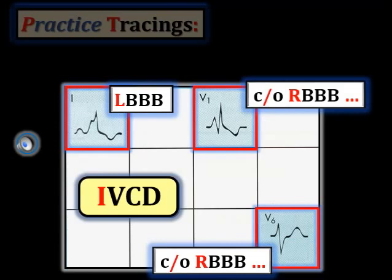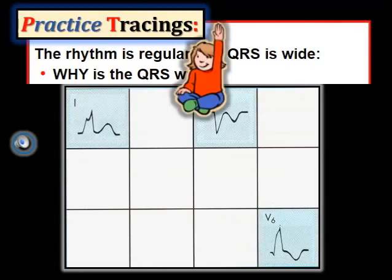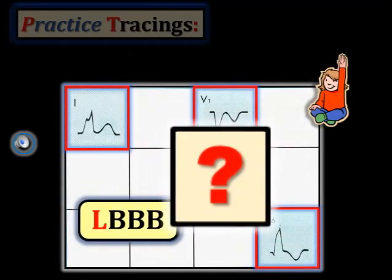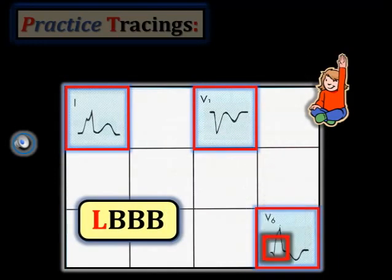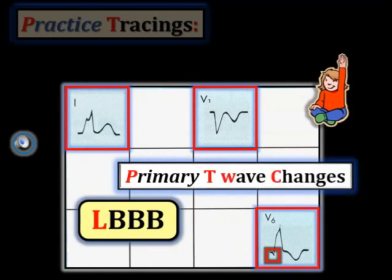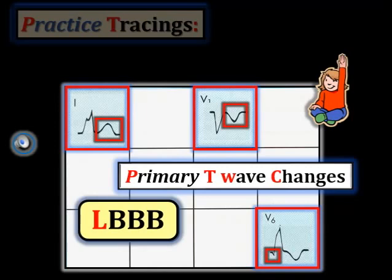Note that ST-T wave changes with IVCD do not necessarily follow the opposite-to-last-deflection rule, so clinical correlation is needed. Finally, this last schematic: look at the three key leads — this is left bundle branch block, but there are several things wrong. We should not have a Q wave in a lateral lead like lead V6 with typical left bundle branch block; therefore this patient has had an infarction at some point in the past. In addition, there are primary ST-T wave changes in two of the three key leads — the T wave should not be upright in lead 1, and it should not be negative in lead V1. This suggests recent or even acute ischemia or infarction. Clinical correlation is needed.